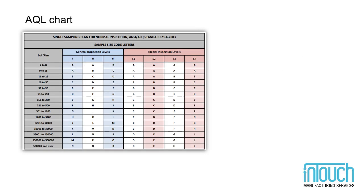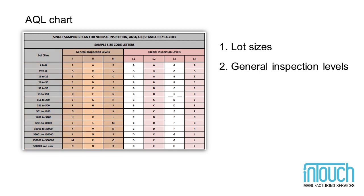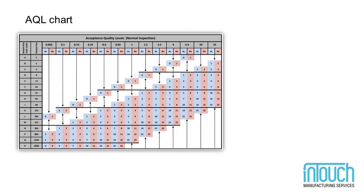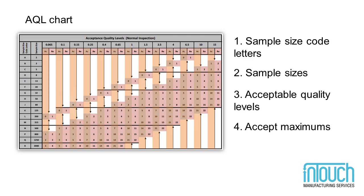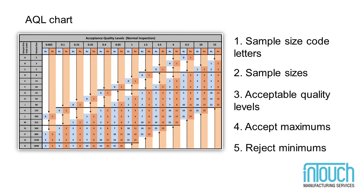Here is the AQL chart, a QC industry standard derived from the American National Standards Institute and the American Society for Quality. Included in the chart, you'll see Lot Sizes, General Inspection Levels, and Special Inspection Levels. On the reverse of the chart, you'll find Sample Size Code Letters, Sample Sizes, Acceptable Quality Levels, Accept Maximums, and Reject Minimums.